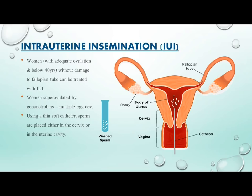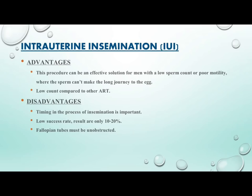Intrauterine Insemination (IUI): Women with adequate ovulation and below 40 years of age without damage to the fallopian tubes can be treated with IUI. Women are super-ovulated by gonadotropins to produce multiple eggs. Using a thin soft catheter, sperm are placed either in the cervix or in the uterine cavity. Advantages: can be effective for men with low sperm count or poor motility. Disadvantages: timing is critical, low success rate of only 10–20%, and fallopian tubes must be unobstructed.